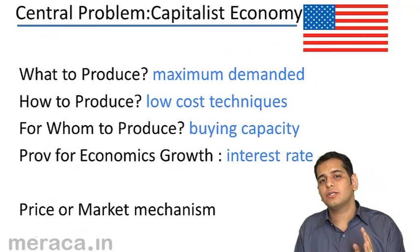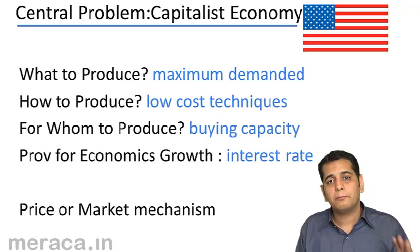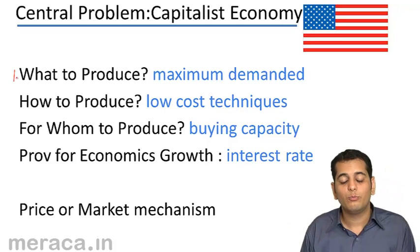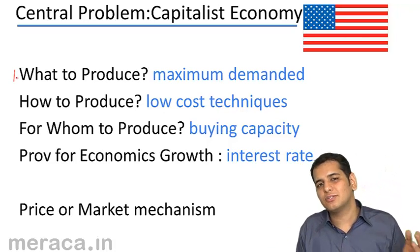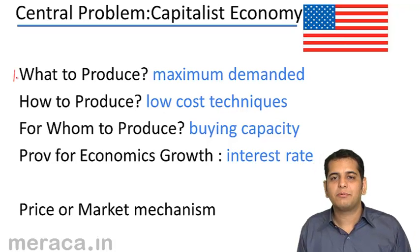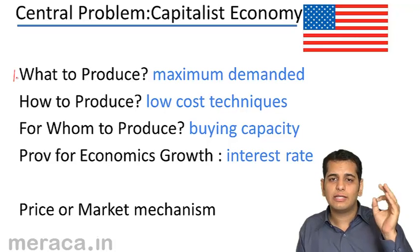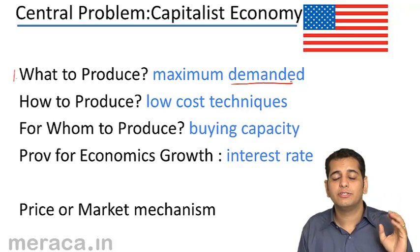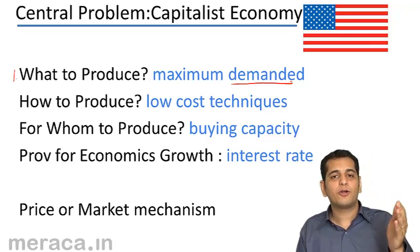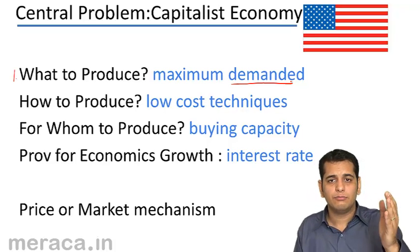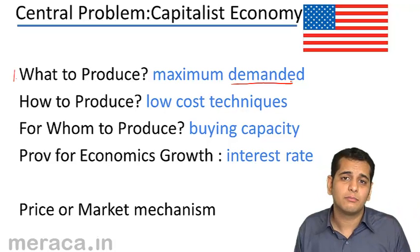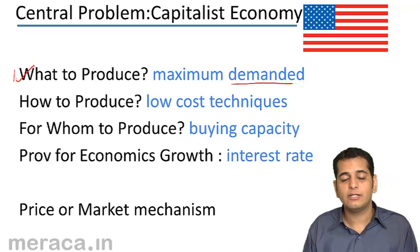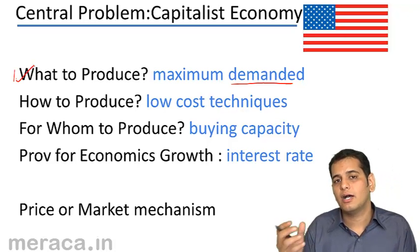Now let's see how a capitalist economy solves the four basic economic problems. The first problem is what to produce, and how it is answered by a capitalist economy. A capitalist economy says produce that good which is highly in demand — which has maximum demand in the market. The product with maximum demand will lead to greater sales and a greater amount of profit. So a capitalist economy tells you to produce a product which has more market and a higher demand.